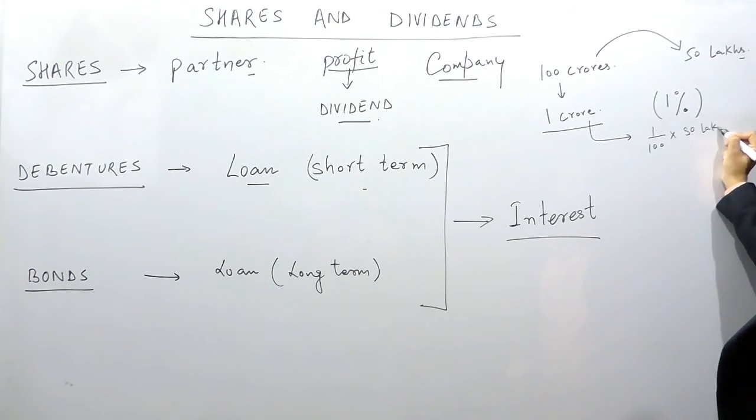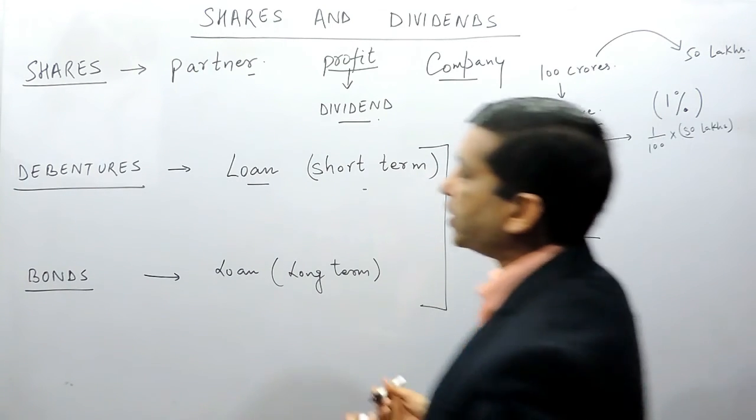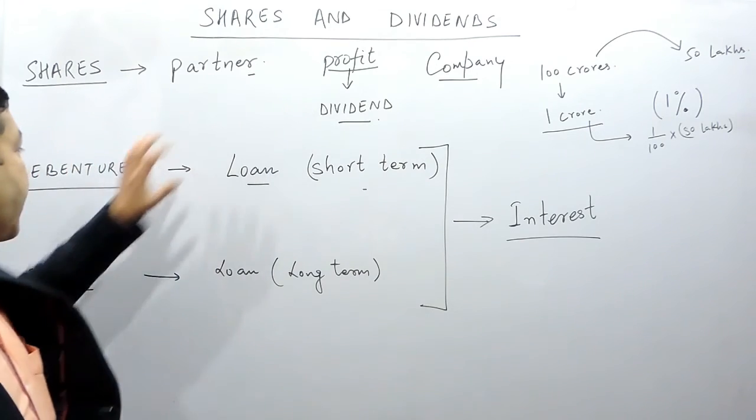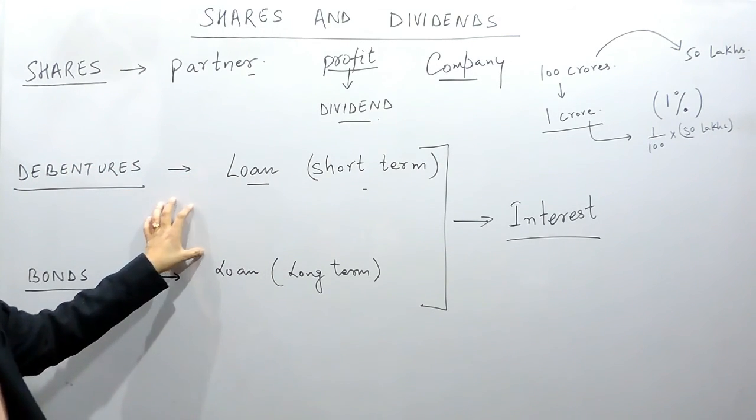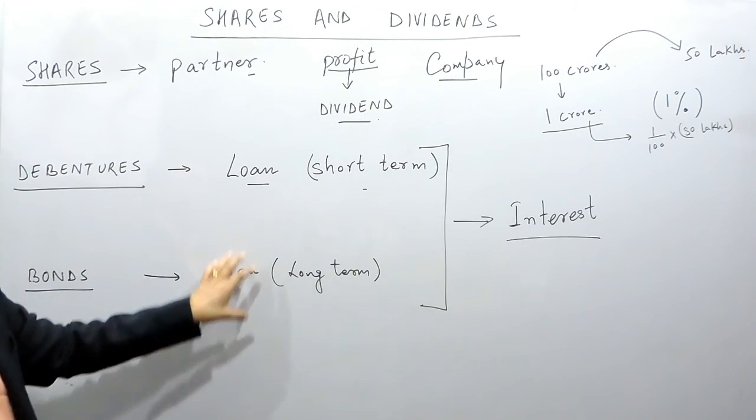So in the case of shares he is the partner, while in the case of debentures and bonds he has just provided a loan to the company and he is not the partner of the company. In the next video we will define shares theoretically completely. Thank you.